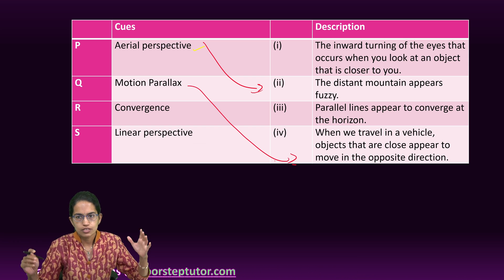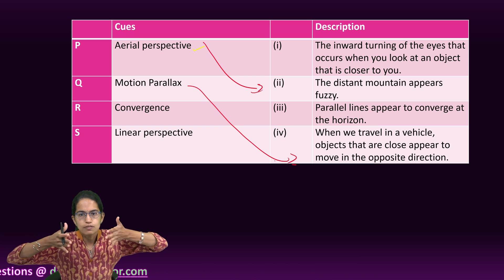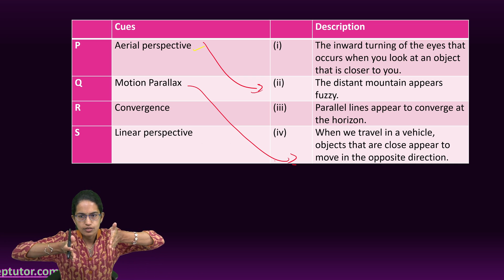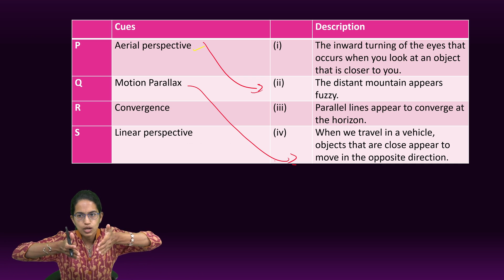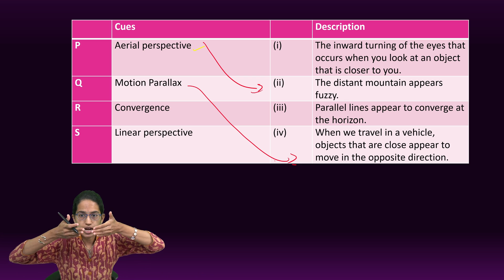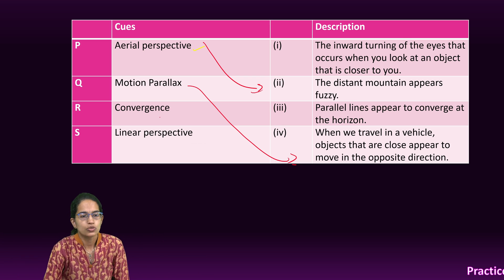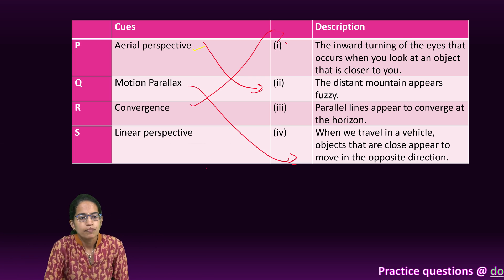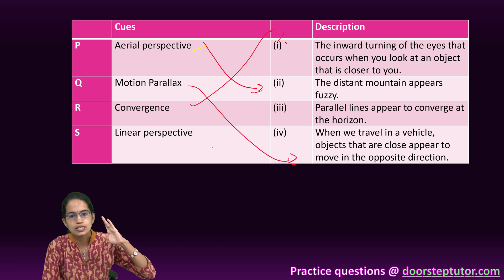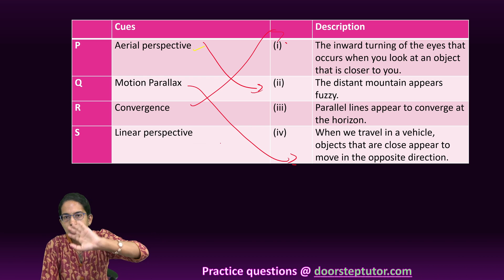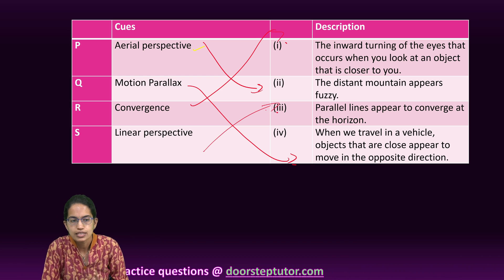Convergence is when we turn our eye inward, we look that the objects that are closer to us are much clearer when our eyes are turned more inwards. That is what is convergence and linear perspective is the parallel lines converge at the horizon and that's known as a linear perspective.